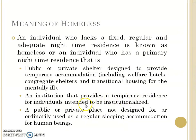The second category is an institution that provides a temporary residence for individuals intended to be institutionalized — for example, a working women's hostel or rehabilitation centers. Rehabilitation centers serve a specific purpose and the person stays only for the duration of treatment. Similarly, females in a working women's hostel may stay only as long as their job is in that particular area, so this is again a temporary residence.